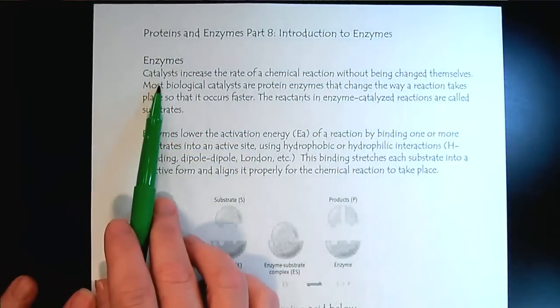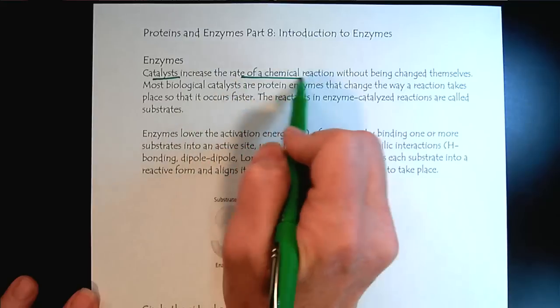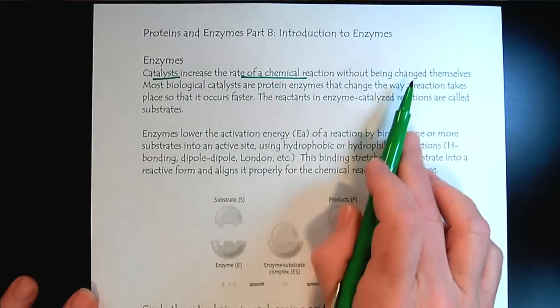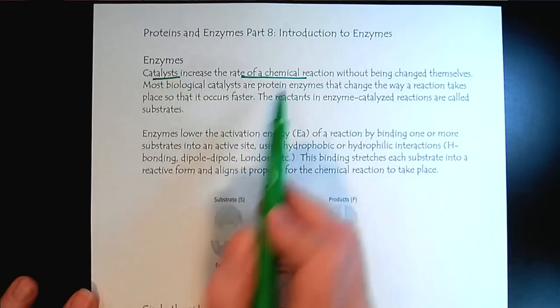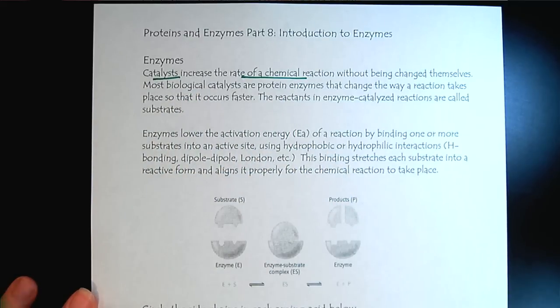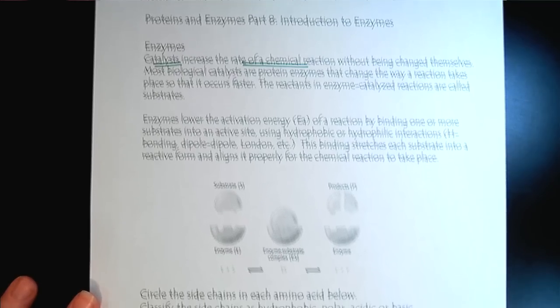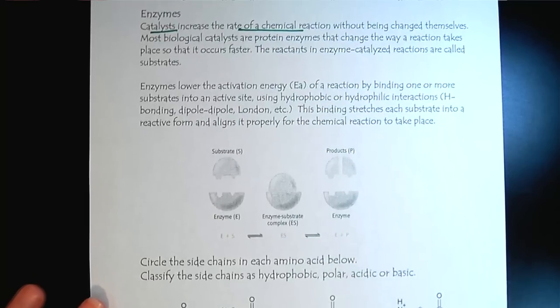Welcome to Part 8 on Proteins and Enzymes. Here we're going to look at an introduction to enzymes. Enzymes are very important because they increase the rate of chemical reactions without being changed themselves. Most biological catalysts are protein enzymes, and they're important because within our body we don't have the luxury of raising the temperature really high or using strong acids or bases. So we need enzymes to catalyze the reactions occurring in our body.